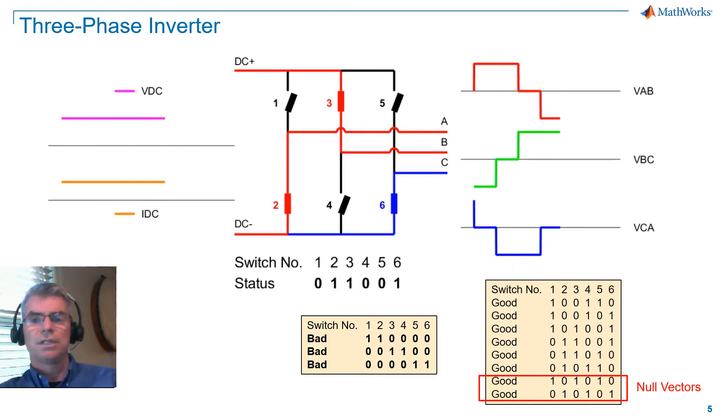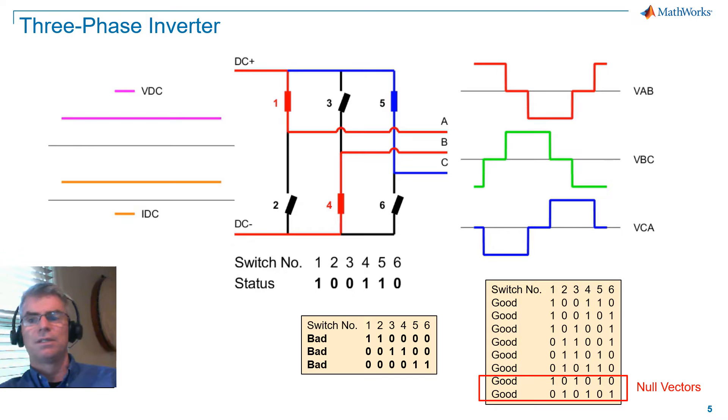Here are our good and bad switching sequences. As with the H-bridge, we want to avoid switching sequences that will short-circuit our supply. I have also shown the null vectors for a three-phase inverter, where we can either turn on switches one, three, and five, or turn on switches two, four, and six.